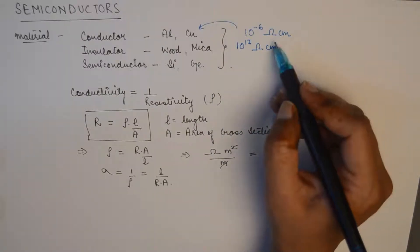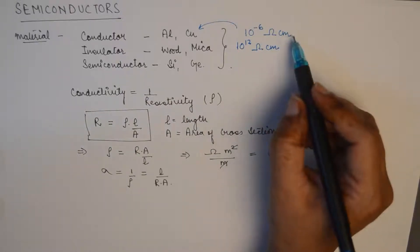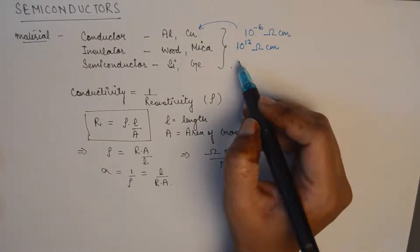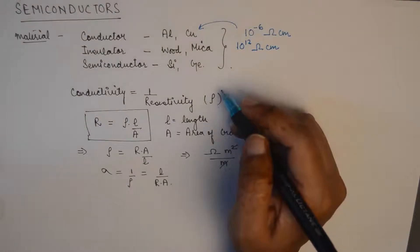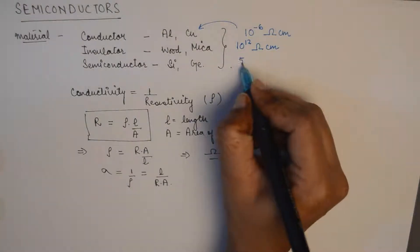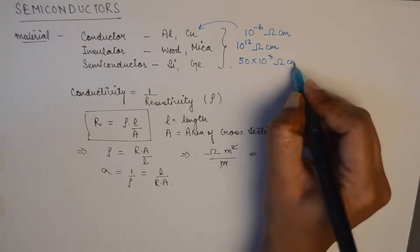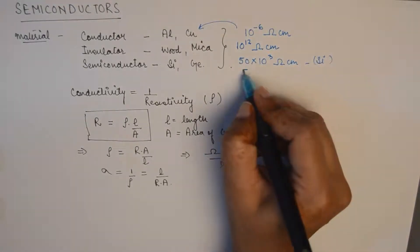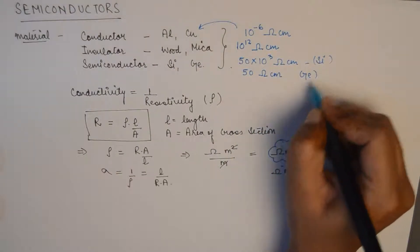You can imagine the difference in flow of current when you see the difference in these resistivity values. For a semiconductor, the resistivity lies between those of the insulator and conductor. Silicon has a resistivity of 50 times 10 to the power 3 ohm-centimeters, and germanium has a resistivity of 50 ohm-centimeters.